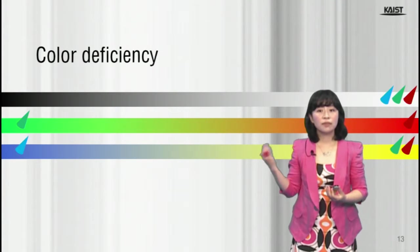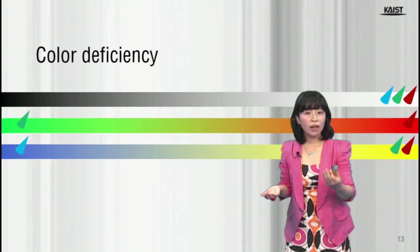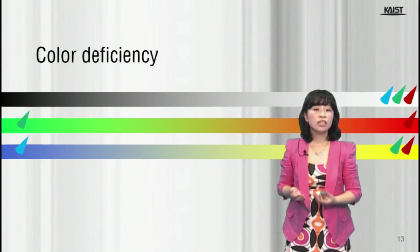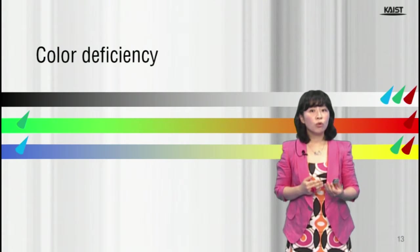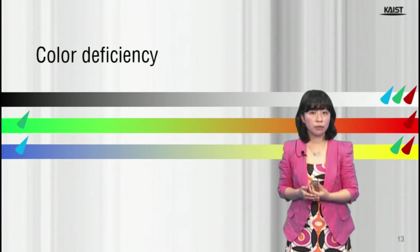The color deficiency such as colorblind or color amblyopia is caused when one or more than one cone types are absent or defective.